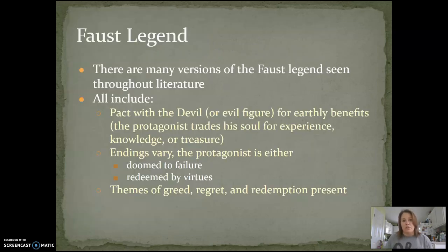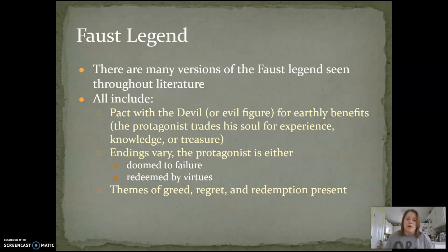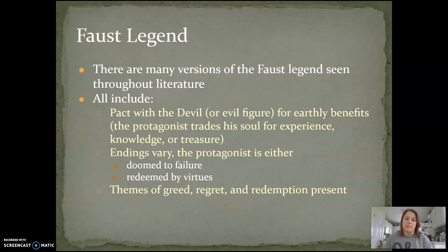There are a whole lot of different versions of the Faust legend seen throughout literature, and they all include the following things. The first is a pact with the devil — this devil can be personified as another evil figure — but the main character will always make some kind of pact for some kind of earthly benefit. They might trade their soul for experience, knowledge, treasure, or love, or they might trade something valuable for one of those things. The endings of the Faust legend often vary: the protagonist is either doomed to failure based on selling his soul, or he can be redeemed by virtues. However, in all versions of the Faust legend, you're going to see themes of greed, regret, and redemption.